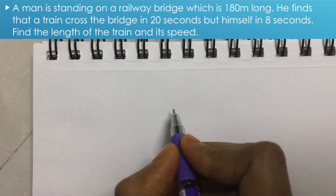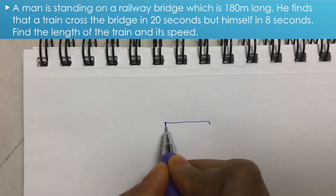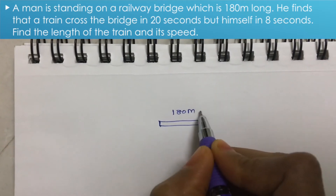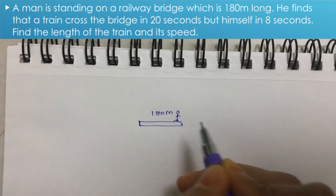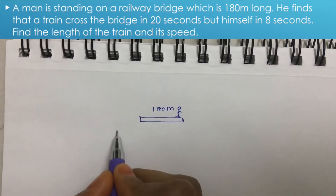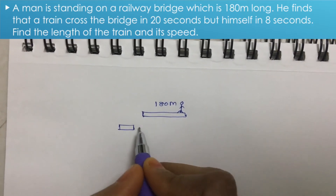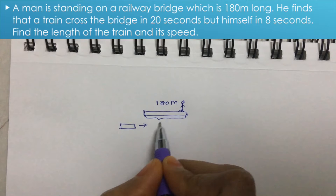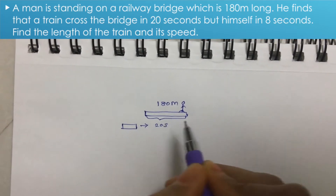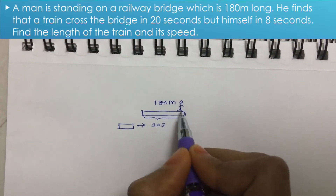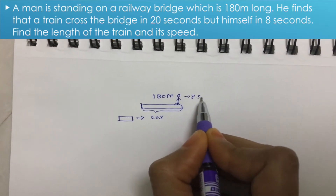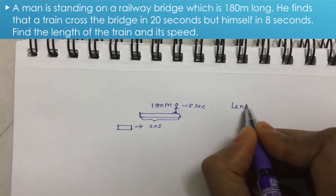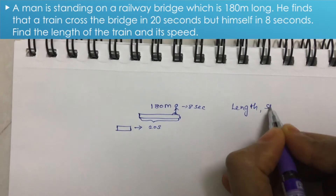If you consider a train approaching a railway bridge, the bridge length is 180 meters and a man is standing on the bridge. The train crosses the entire bridge in 20 seconds and crosses the man alone in 8 seconds. From these two pieces of data, we will find the length and speed of the train.